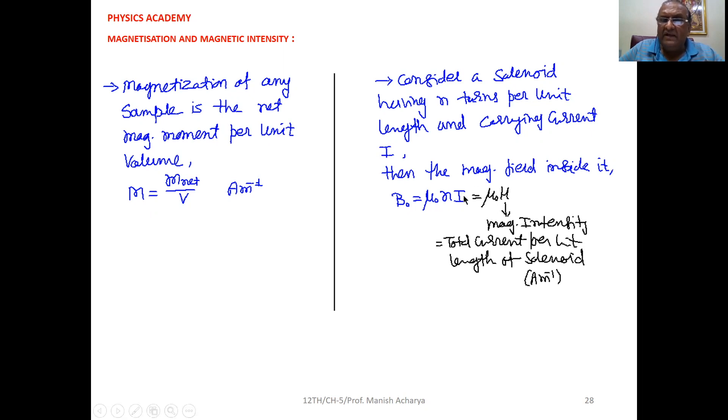Now, N into I, that is called H, that is magnetic intensity.